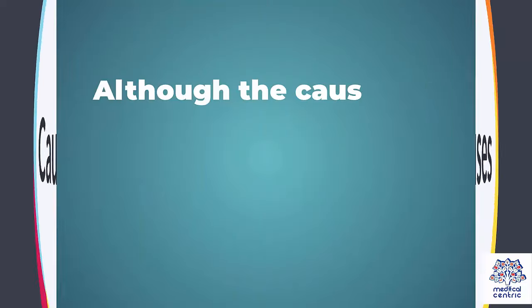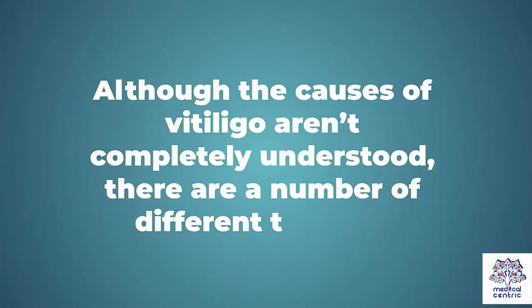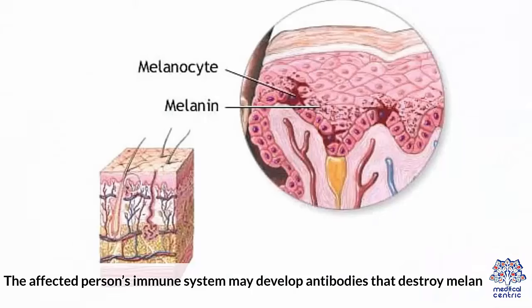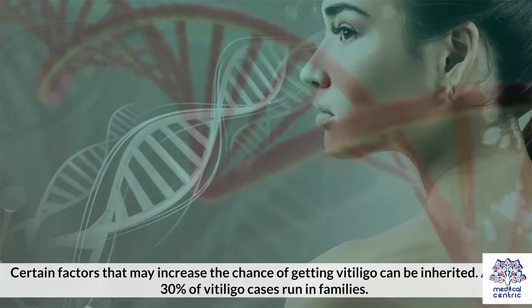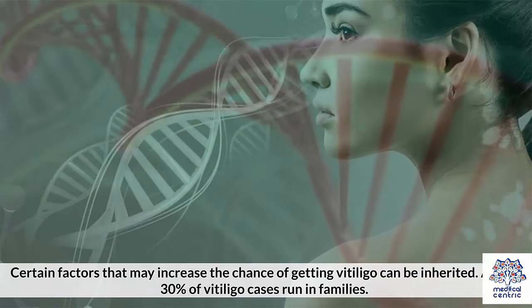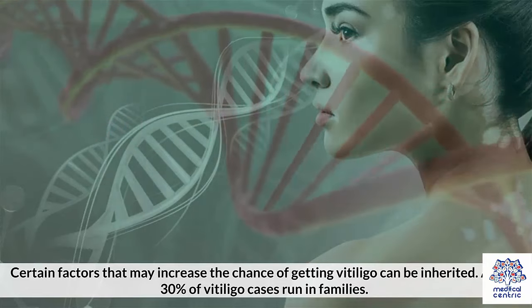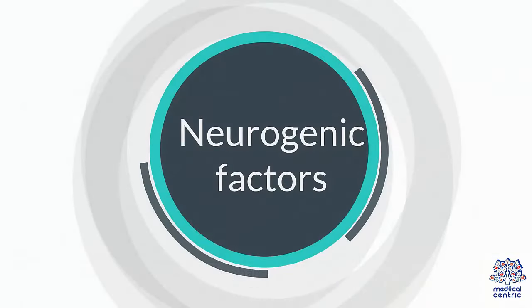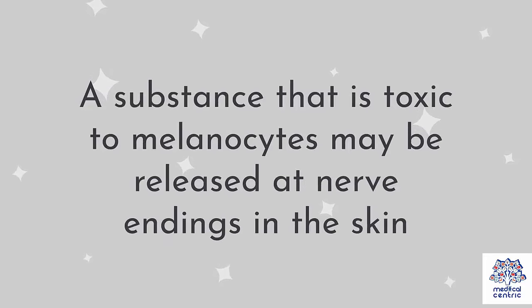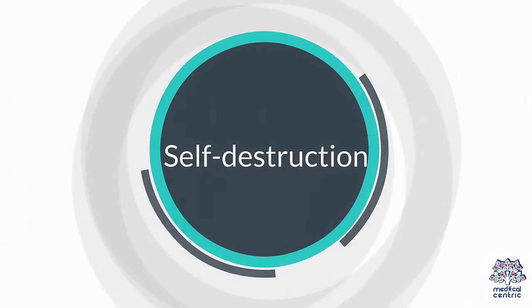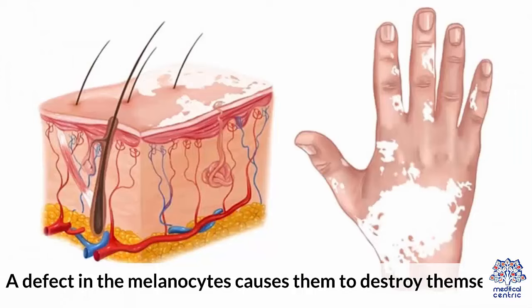Causes: Although the causes of vitiligo aren't completely understood, there are a number of different theories. Autoimmune disorder: the affected person's immune system may develop antibodies that destroy melanocytes. Genetic factors: certain factors that may increase the chance of getting vitiligo can be inherited; about 30% of vitiligo cases run in families. Neurogenic factors: a substance that is toxic to melanocytes may be released at nerve endings in the skin. Self-destruction: a defect in the melanocytes causes them to destroy themselves.